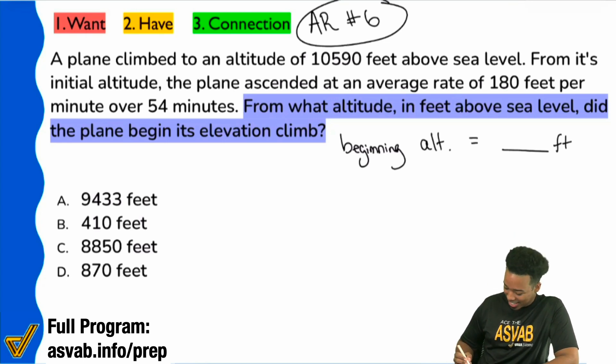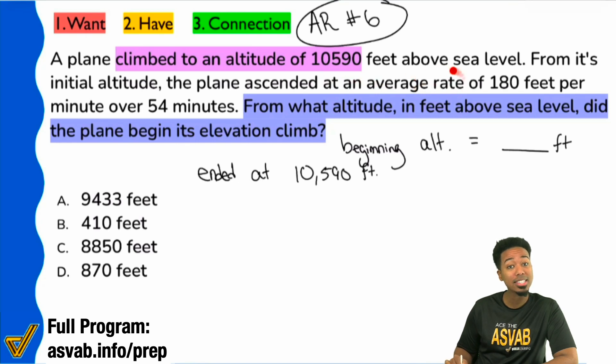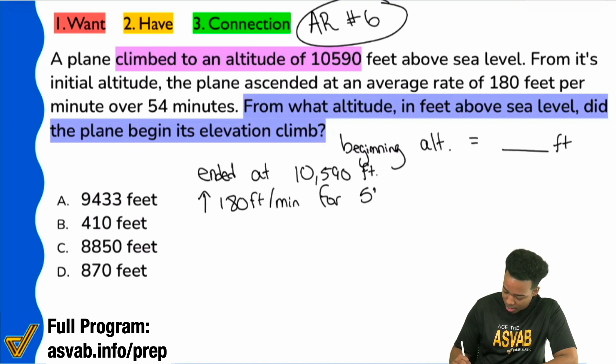So let's go ahead here and let's have ourselves a really good time. We're going to write down the information we have. So we see that the ending altitude right over here climbed to an altitude of 10,590. So we ended at 10,590 feet. And then we see that we have more information here. It says from the initial altitude from where it began, the plane ascended at an average rate of 180 feet per minute over 54 minutes. So we're ascending 180 feet per minute. And that happens for 54 minutes.